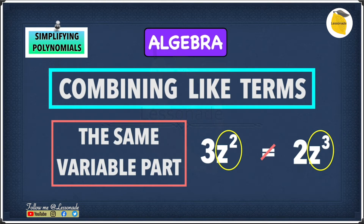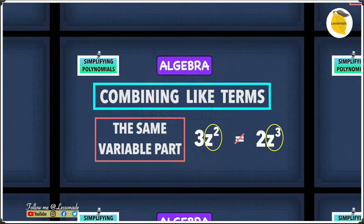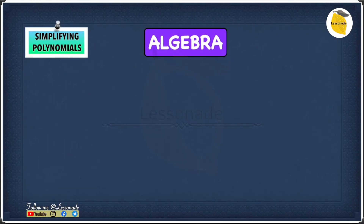3z raised to the power of 2 and 2z raised to the power of 3 are not like terms. When combining like terms, the terms must have the same variable part — it must be exactly the same. To understand this better, let's have a look at some examples.